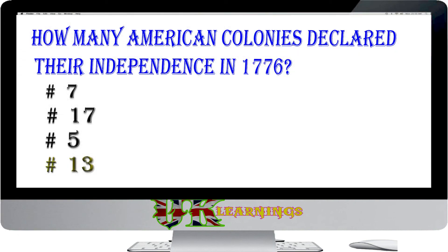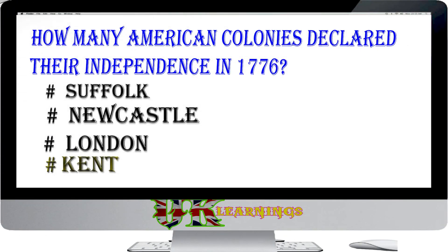How many American colonies declared their independence in 1776? Options: 7; 17; 5; 13. The answer is 13. In 1776, 13 American colonies declared their independence, stating that people had a right to establish their own governments. The colonists eventually defeated the British Army and Britain recognised the colonies' independence in 1783.